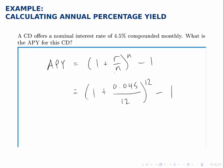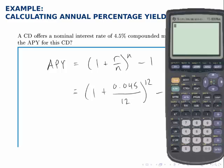Subtract 1, and now all we have to do is calculate this. In parentheses, we have 1 plus 0.045 divided by 12. We get that answer. Raise that to the 12th power.